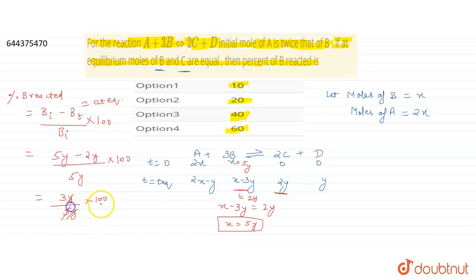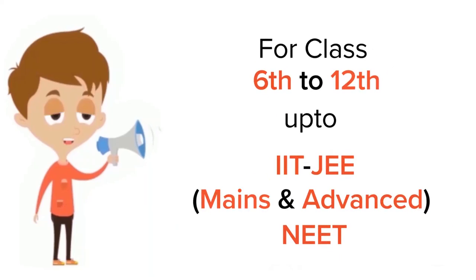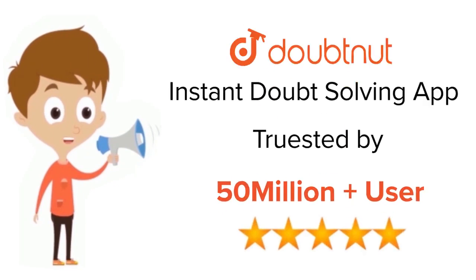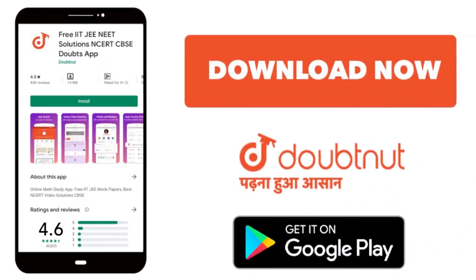The Y's cancel, giving 3/5 × 100 = 60%. So 60% of B reacted till equilibrium. The answer for this question is 60%. Thank you, guys. For class 6–12, IIT JEE and NEET level, trusted by more than 5 crore students — download DoubtNut today.